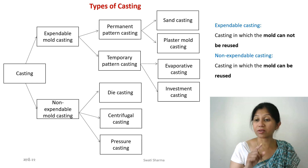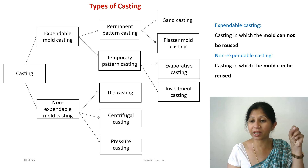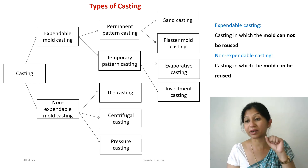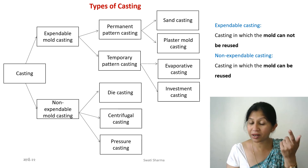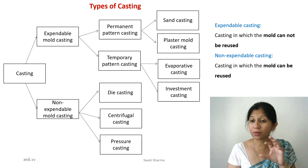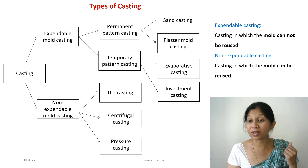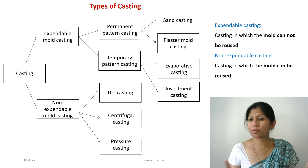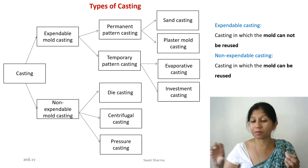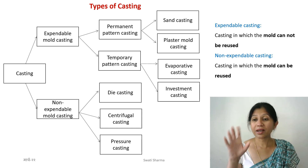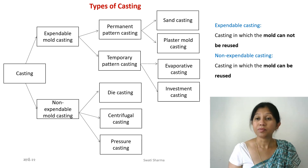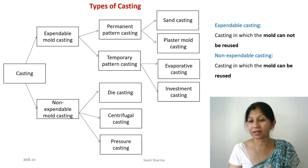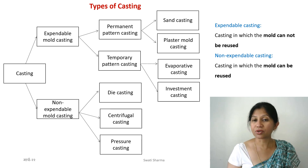Within expendable molds, there is something called permanent pattern casting — here we also talk about the pattern. The pattern can be permanent or temporary. Wood or metal patterns are permanent. Sand casting falls under permanent pattern casting, where the mold cannot be reused because it is sand, but the same pattern is used every time you make a new mold. There is also plaster mold casting, which is very similar to sand mold casting except the refractory material is typically plaster of Paris.